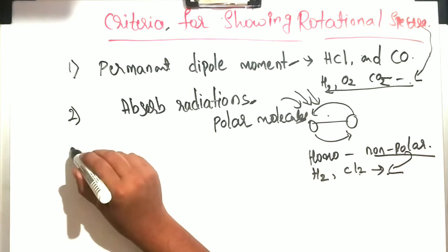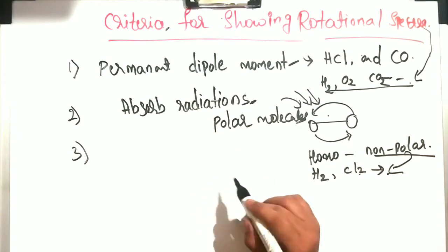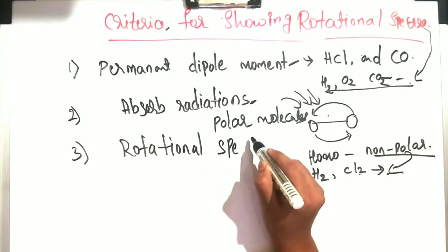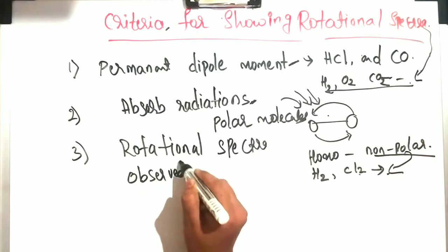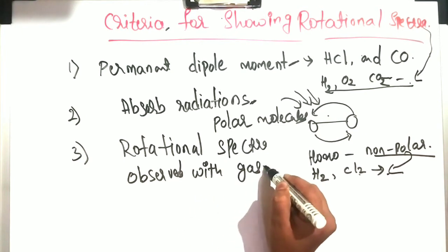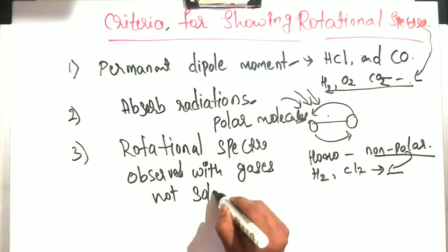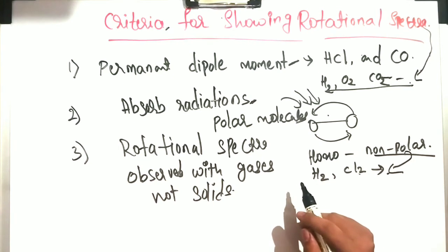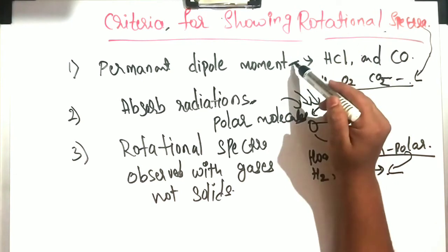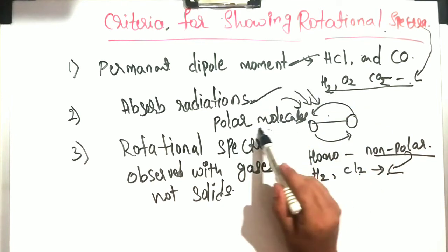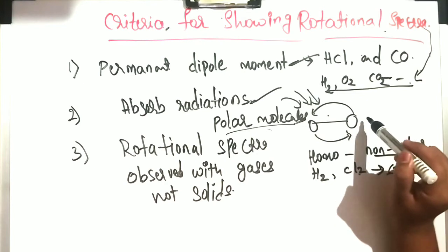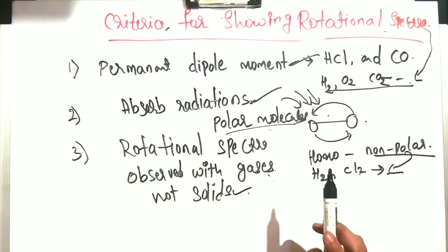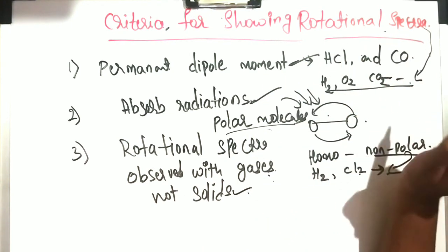The third criteria is that rotational spectra are observed with gases, not with solids or liquids, because in those cases the rotations of neighboring molecules interfere with one another. In summary: the first criteria is permanent dipole moment, the second is that the molecule must be polar and absorb radiations while rotating, and the third is that only gases show rotational spectra, not solids or liquids.